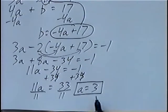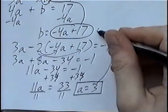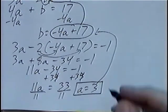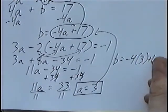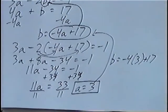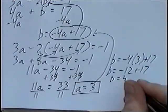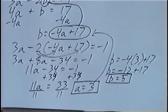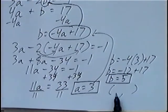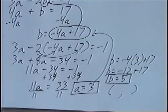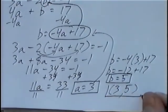Solving again for b to get our second answer. We can take a equals 3 and plug it into either of the original equations, or into the equation we used for substitution. So b equals negative 4 times 3 plus 17, which is negative 12 plus 17, so b equals 5. You can leave your answers as a equals 3 and b equals 5, or use a point. When you have different variables, put them in alphabetical order: a goes first as 3, and b goes second as 5, giving the point 3 comma 5.